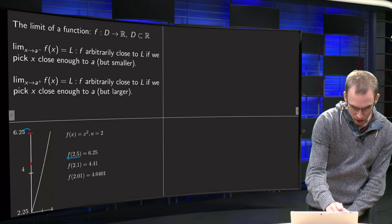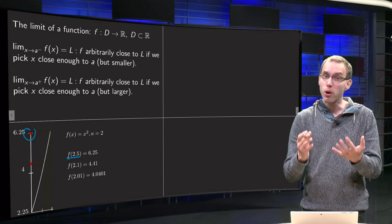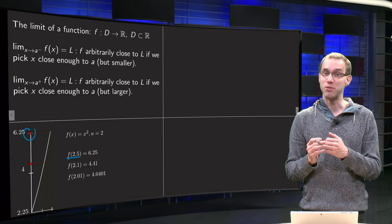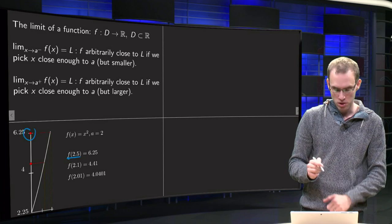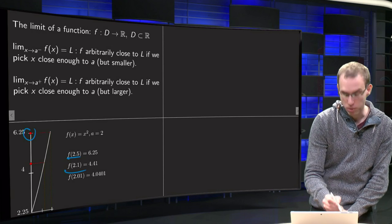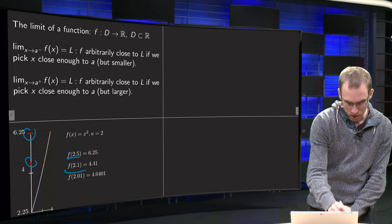So then we are over here on the y axis. And now we want to approach the value x equals 2. So we start at 2.5 and we take smaller values approaching 2. So we continue with 2.1, we compute 2.1 squared equals 4.41, which is over here.